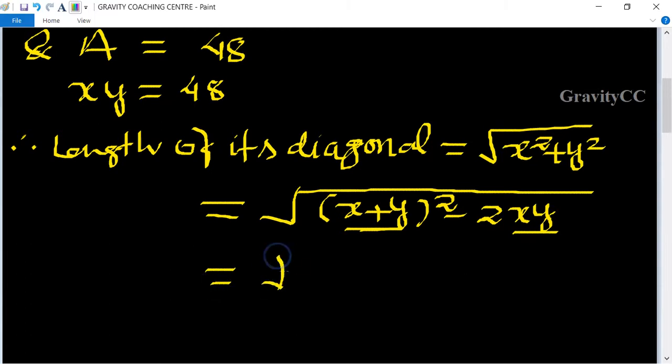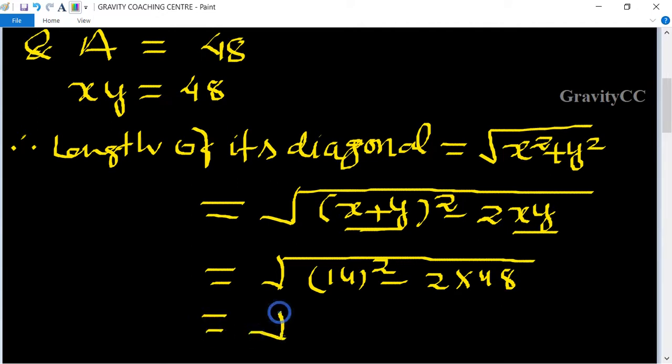root under x plus y square minus 2xy equals root under 14 square minus 2 times 48, equal to root of 196 minus 96 equal to root 100